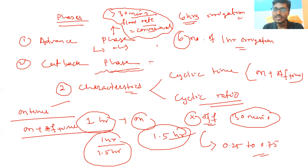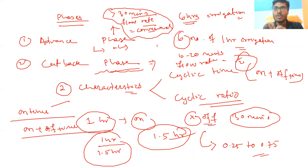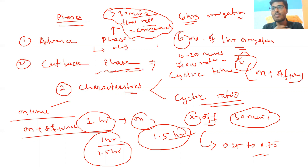During the cutback phase, the cyclic time is usually reduced to 10 to 20 minutes and the flow rate is usually half of the conventional surface irrigation flow rate. Due to this cutback phase, water remains in the field channel or furrow throughout the irrigation and also infiltrates uniformly throughout the field. That is why percolation loss is lower under surge irrigation.